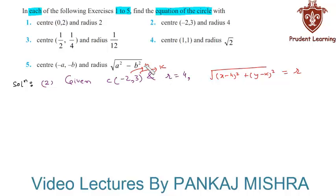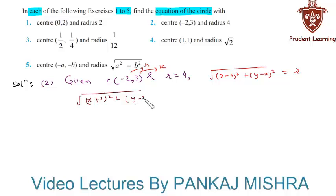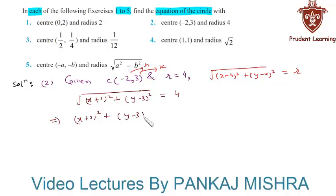Substituting the values of h, k, and r in this formula, we have the square root of (x minus of minus 2, giving plus 2) whole square plus (y minus 3) whole square equal to 4. On squaring both sides, this gives us (x plus 2) whole square plus (y minus 3) whole square equal to 16.